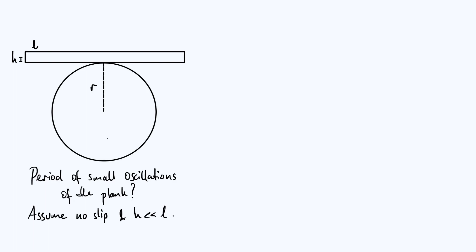We're going to make a couple of assumptions. Firstly, that the plank doesn't slip against the surface of the cylinder — that's going to give us an important constraint. We're also going to assume that it's a thin plank, so the h marked onto the diagram is much smaller than the length l.